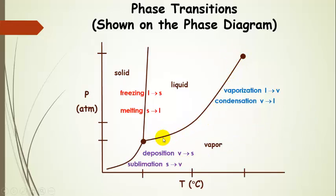Now this line, believe it or not, you've actually seen it before. This is that liquid-vapor coexistence line that we saw on our vapor pressure diagram. So vaporization is when we have a liquid going to a vapor. And condensation is when we have a vapor condensing into a liquid.